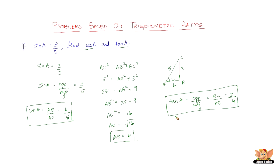This ends the first problem. For these simple problems, all you have to do is find the one missing side in the right angle triangle using the Pythagorean theorem, then use the definitions of the trigonometric functions to find the unknown values. Let us quickly solve another problem — don't expect it to be as simple as the ones we've solved so far.